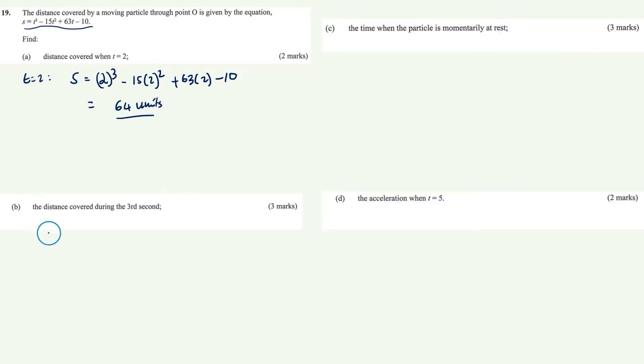Now for part B, we're asked to find the distance covered during the third second. There might be a tendency to just put t equals 1 and find the distance. That's not how the equation is applied. You have to find the distance for the whole 3 seconds and then subtract the distance at 2 seconds.